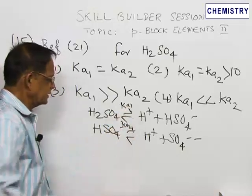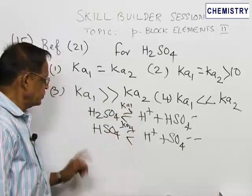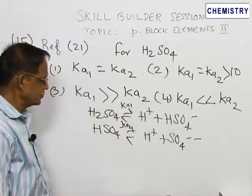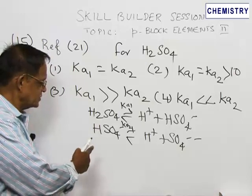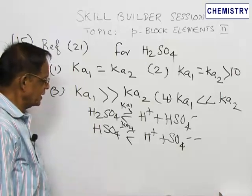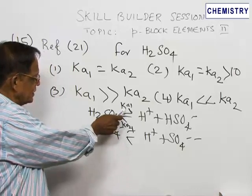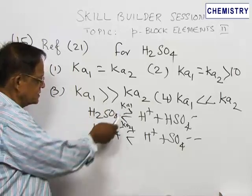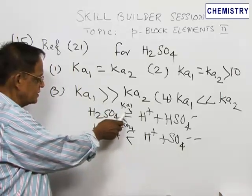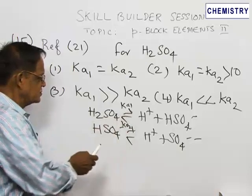In the first stage, ionization is from neutral molecule H2SO4, whereas in the second case, you have to remove a proton from a negative ion. So, the first value is far greater than the second. The dissociation constant is a measure of the extent of dissociation.